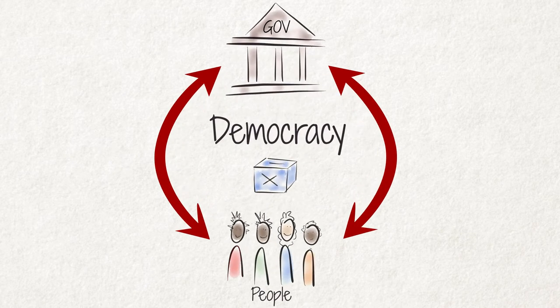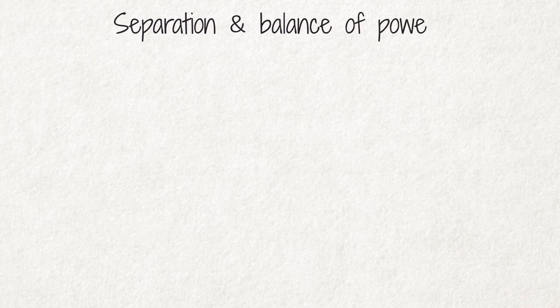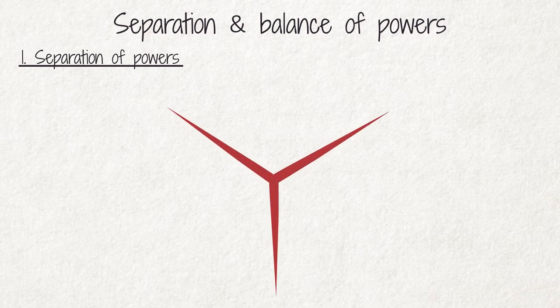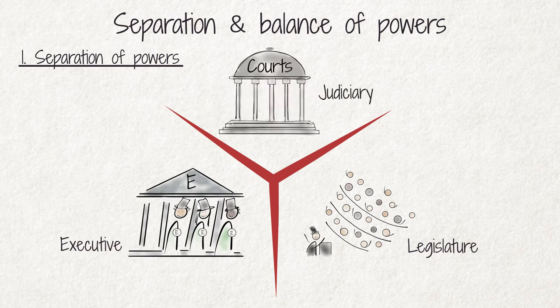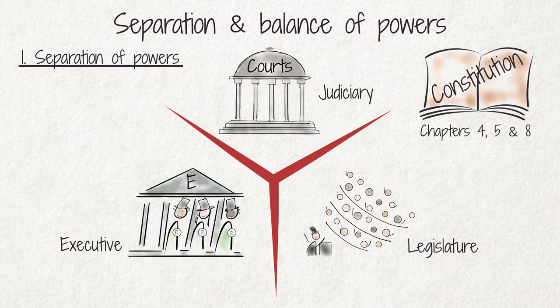Democratic government is further characterized by the separation and balance of powers. Separation of powers means that the democratic political system is divided into three branches: the legislature, the executive, and the courts, also called the judiciary. Chapters 4, 5, and 8 of our Constitution lay out the structure, roles, and responsibilities of the three branches of the South African government.